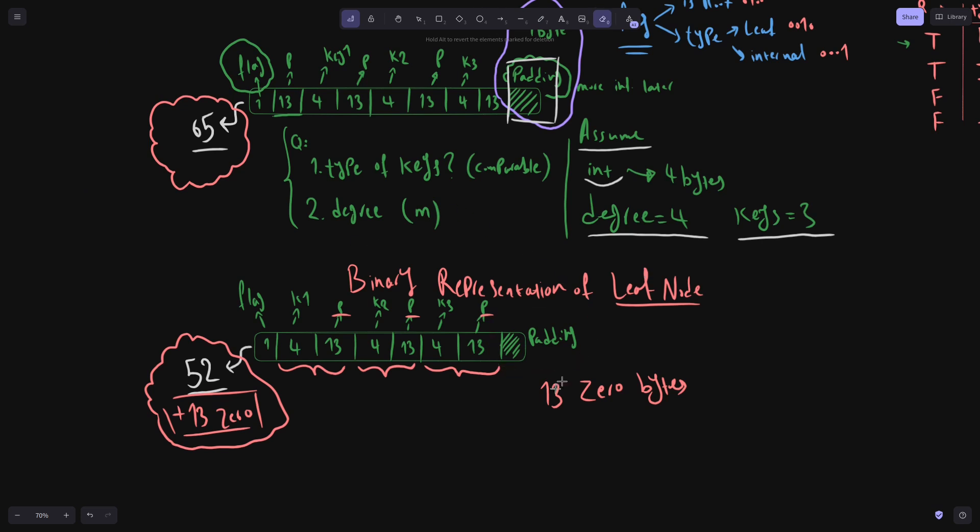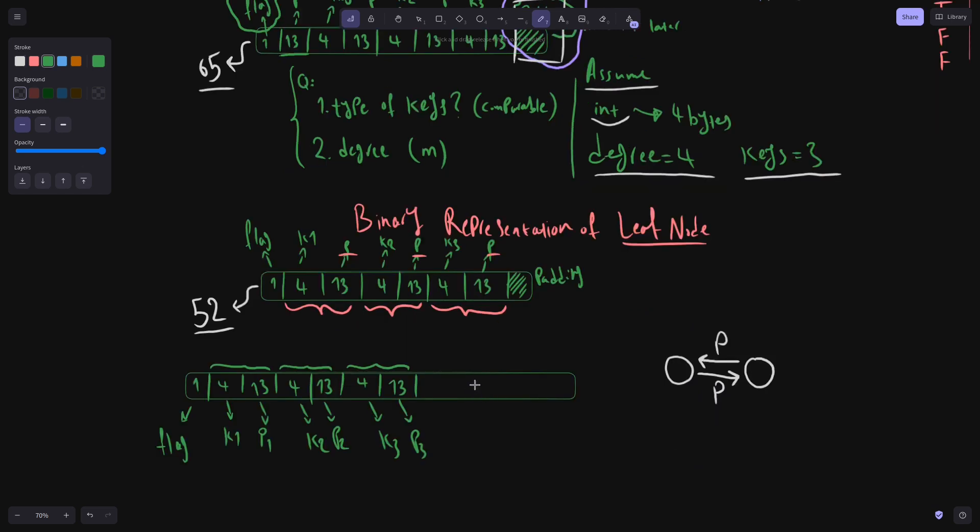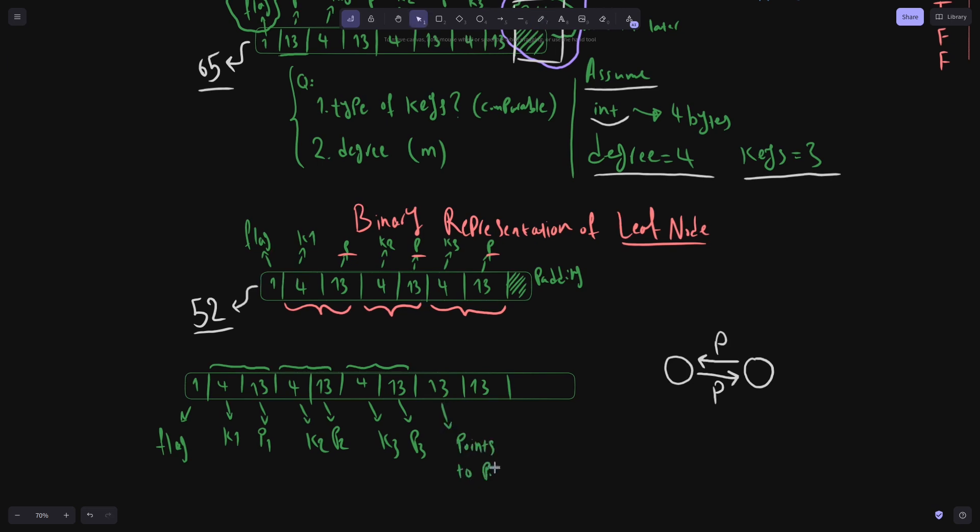However, something is missing in our binary representation of a leaf node. As we have seen in previous videos, when we have a leaf node, and it gets full, then a new leaf node is created, and the old one points to the new leaf node. Additionally, the new leaf node also knows about the previous leaf node. So we can say in binary representation of our leaf nodes, we need to store two more pointers to point to previous and next node. So if we assume that this is a binary representation of a leaf node, what I've done is that I've added two new pointers at the end of this byte array. The first one points to the previous node. The second one points to the next node.